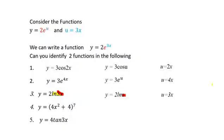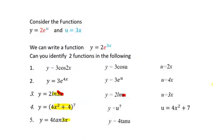For number 4, let u = 4x² + 4, so y = u^7 and u = 4x² + 7. For number 5, the linear function 4x is your u, so you can write y = 4tan(u) where u = 3x.